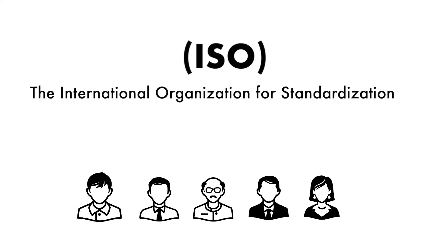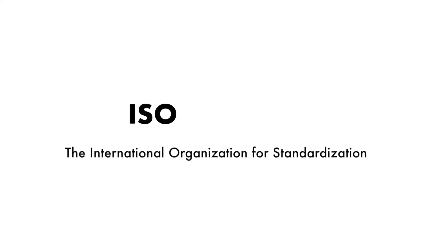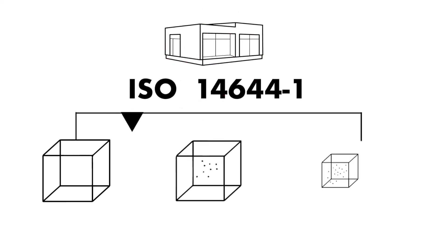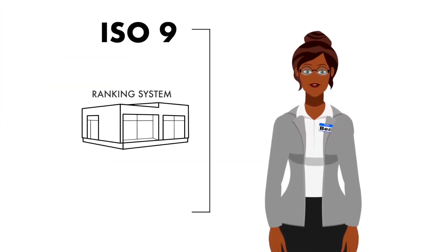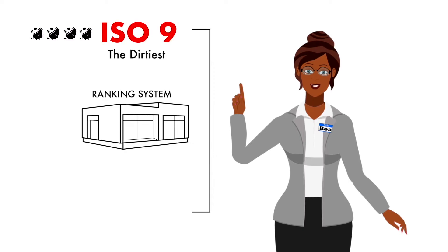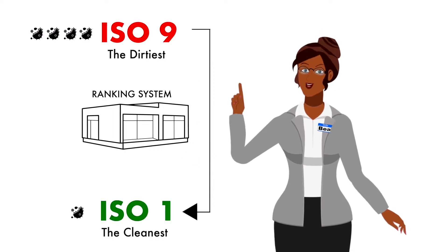The ISO standards for clean rooms fall under ISO 14644-1, which ranks clean rooms according to the number of particles per cubic meter by micrometer size. The ranking system ranges from ISO 9, the dirtiest, to ISO 1, the cleanest.